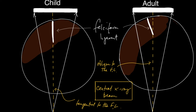And so when the x-ray beam is transmitted through the patient, it becomes tangential to the falciform ligament.